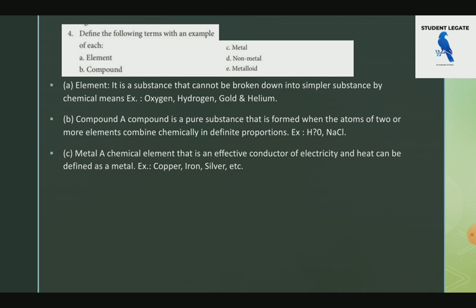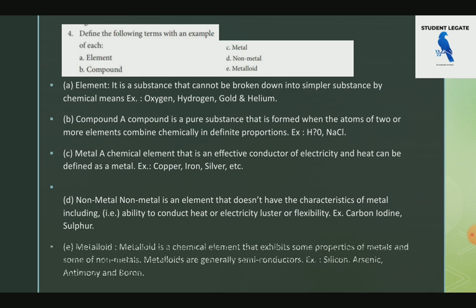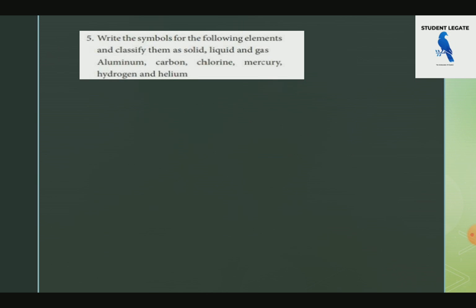A metal is an element that effectively conducts electricity and heat. Examples: Copper, Iron, Silver. A non-metal is an element that does not have the characteristics of metal, including the ability of conducting heat and electricity. Examples: Carbon, Iodine, Sulfur. A metalloid is a chemical element that exhibits the properties of both metals and non-metals. Example: Silicon.